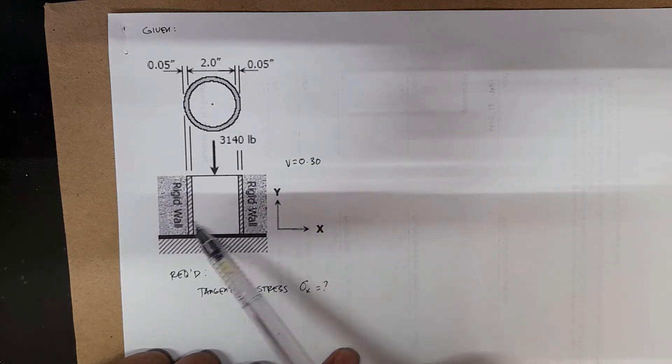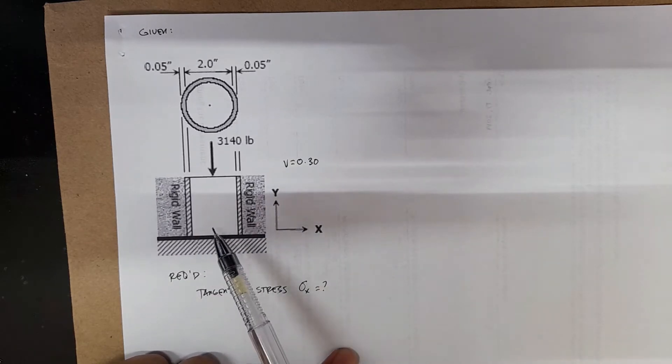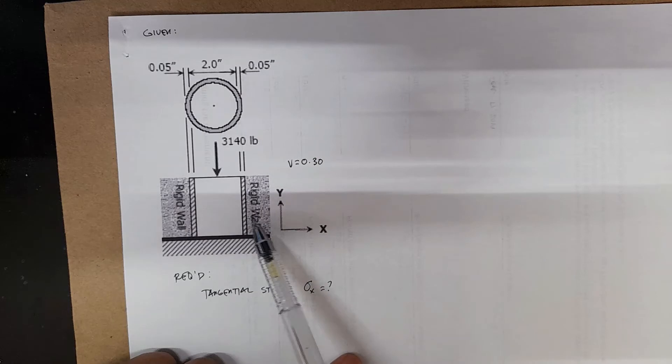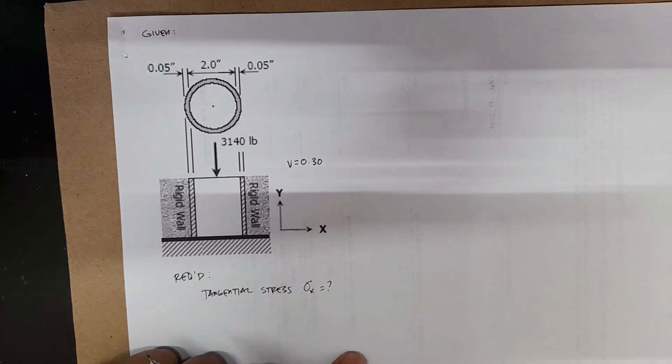With X and Y axes shown, you will have no deformation along the X direction because of the presence of the rigid walls. The thickness is 0.05 inches.